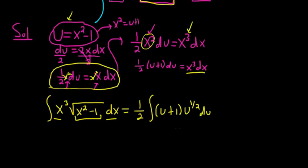So let's do that. So this is equal to 1 half. Let's distribute the u. There's a 1 here. So when you multiply these, you add the exponents. It's 1 plus 1 half. So it's 2 halves plus 1 half. So it's 3 halves. u to the 3 halves plus, and then this is going to be just u to the 1 half and then du.